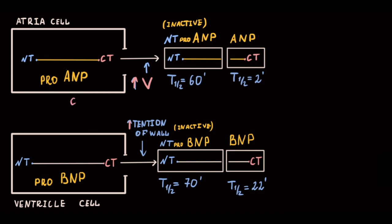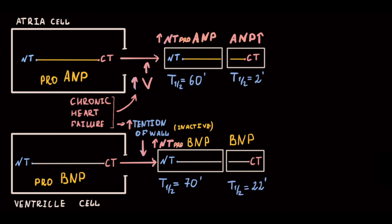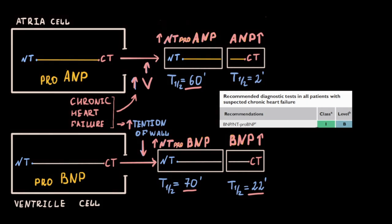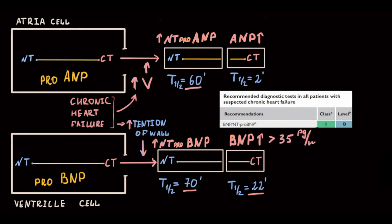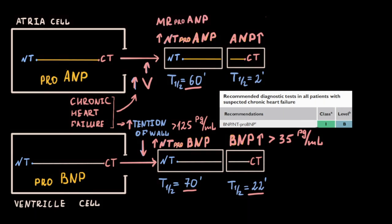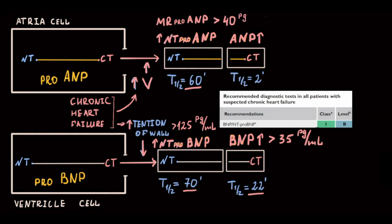High intra-atrial volume and high ventricular wall tension can be caused by chronic heart failure. Therefore, chronic heart failure is associated with high levels of NT-proANP, ANP, NT-proBNP, and BNP, making these useful diagnostic markers when heart failure is suspected. The most suitable markers for detection, based on their half-lives, are BNP, NT-proBNP, and NT-proANP. The diagnostic upper limits are: BNP more than 35 pg/L, NT-proBNP more than 125 pg/L, and for NT-proANP its remnant MR-proANP is used, with an upper limit of more than 40 pg/L.